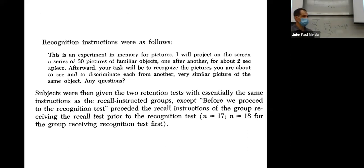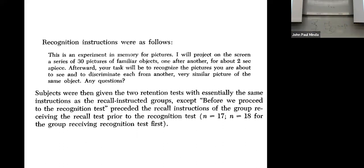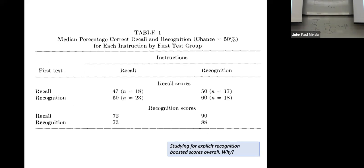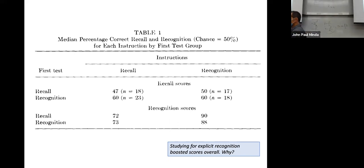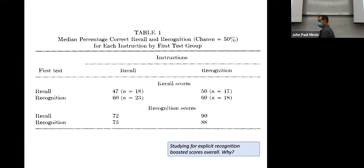The other half of subjects were randomly assigned to the recognition study condition, told they'd be tested on recognition afterward, then they also got a recall test. Here's what she found: studying for explicit recognition seemed to improve scores overall. If you studied for recognition, your performance on the recognition task — whether given a recall task first or a recognition task first — was significantly higher than subjects who planned to get a recall test.